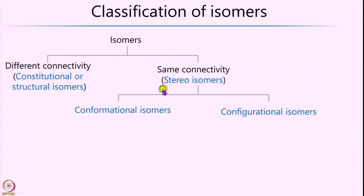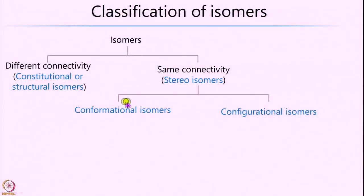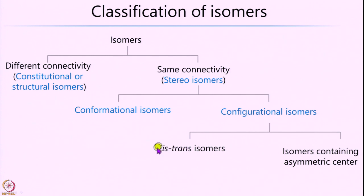Stereoisomers can be further classified into conformational isomers and configurational isomers — a subtle but important distinction. Conformational isomers do not involve any bond making or breaking, whereas to go from one configurational isomer to another, you have to break a bond and rearrange it. Configurational isomers can be further subdivided into cis-trans isomers and isomers containing an asymmetric carbon, both of which have a profound influence on our day-to-day life.